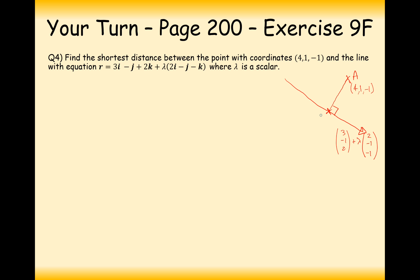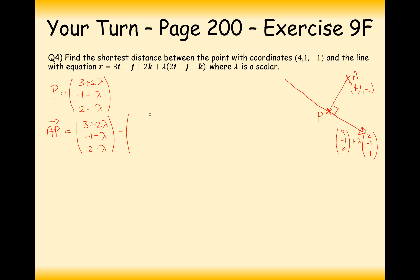A point P on the line must have coordinates (3 plus 2 lambda, minus 1 minus lambda, 2 minus lambda). We're looking for the direction from A to P, which is coordinate P minus coordinate A: (3 plus 2 lambda minus 4, minus 1 minus lambda minus 1, 2 minus lambda minus minus 1). Simplifying, this gives us (2 lambda minus 1, minus lambda minus 2, 1 minus lambda). That is the direction vector from A to P.